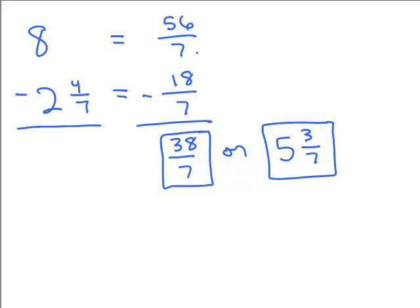Some people can do this in their head: what do I have to add to 2 and 4 sevenths to get back to 8? If I add 3 sevenths, that gives me 3 whole, and then 5 more gets to 8 — so the answer is 5 and 3 sevenths. That's a way of reasoning it out differently, and it's a perfectly valid approach.